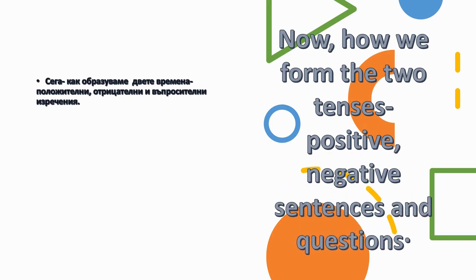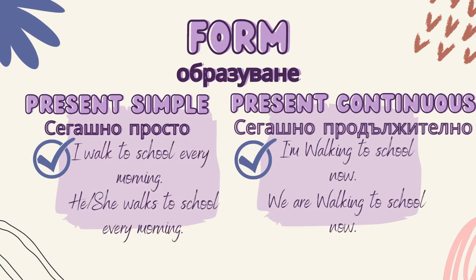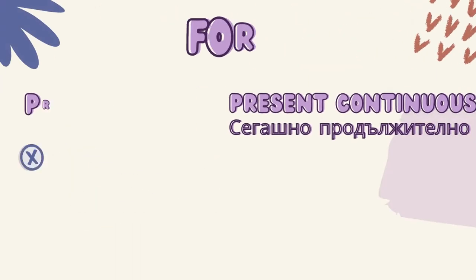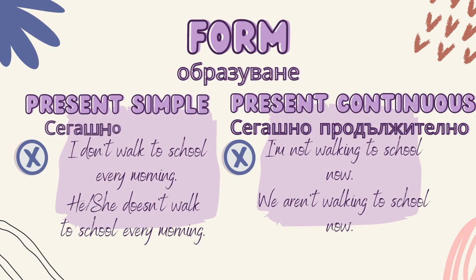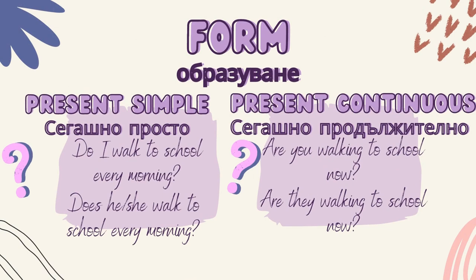Let's have a quick look at the differences in the form of the sentences in both tenses. In the simple tense the verbs usually stay in their base forms. In negative sentences we use don't and doesn't for he, she, it with the base form of the verb. Questions are formed with do or does and the base form of the verb. While in the continuous tense we use am, is, are with the present participle form of the main verb.